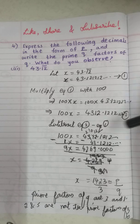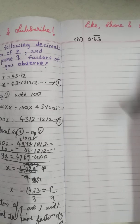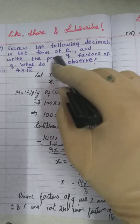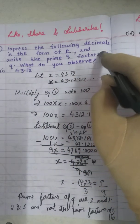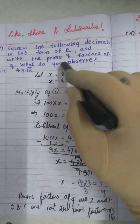So let's start this video. In today's video, we will be discussing exercise 1.3, 4th question, 4th bit, in which we have to express the following decimals in the form of P by Q and write the prime factors of Q and it is also asking us what do you observe.